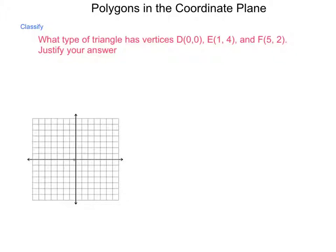D is located at the point (0, 0). E is at (1, 4). And F is at (5, 2). Now, if we were to connect these points to form a rough triangle, what type of triangle is this? It looks like it could be either scalene or isosceles, but let's do the work for it.